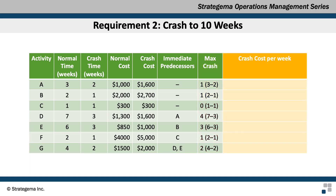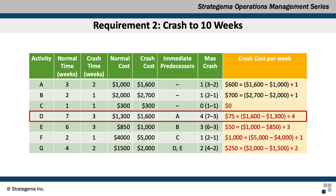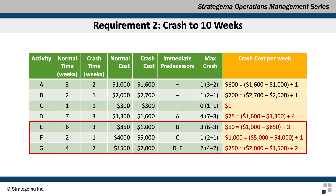Next, we determine the crash cost per week by taking the crash cost minus the normal cost and dividing by the maximum crash time. For activity A, the crash cost per week is $600 ($1,600 minus $1,000, divided by 1 week). For B, it's $700 ($2,700 minus $2,000, divided by 1 week). Activity C has a crash cost of $0 since it cannot be crashed. Activity D is $75 ($1,600 minus $1,300, divided by 4 weeks). The remaining activities have crash costs of $50 per week for E, $1,000 per week for F, and $250 per week for G.